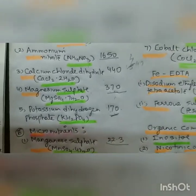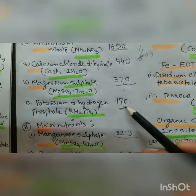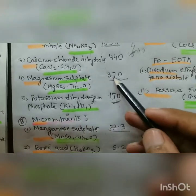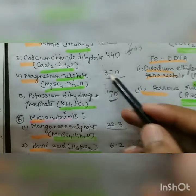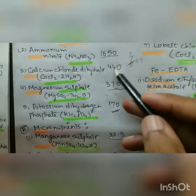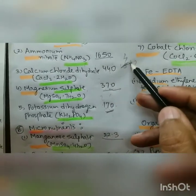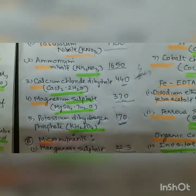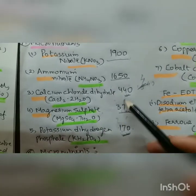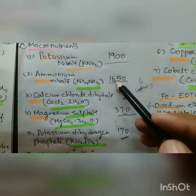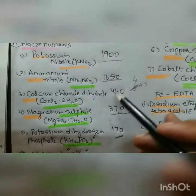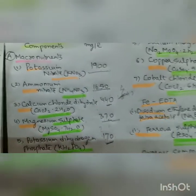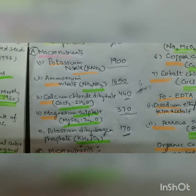Here is a memory trick for macronutrients: start with 170 (potassium dihydrogen phosphate), then 370 (magnesium sulfate) — their sum is 540, but your brain autocorrects to 440 (calcium chloride, like 440 volts). Then approximately 1650 (ammonium nitrate), and when you add these up you get approximately 1900 (potassium nitrate). This is the way to remember the macro concentrations.